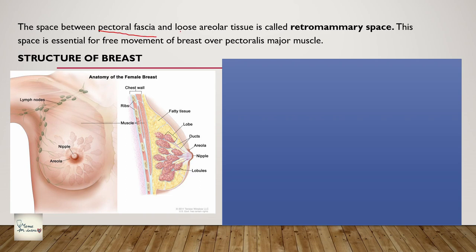The space between the pectoral fascia (the deep fascia) and the loose areolar tissue is called the retromammary space. This space is essential for the free movement of the breast. This point is important because if there is a breast carcinoma, this space will be filled with cancerous tissue and the fibrous stroma will be filled with these cells, so there is no free movement and it gets stuck in place. That is one of the diagnoses for breast cancer. The breast lies over the pectoralis major muscle.